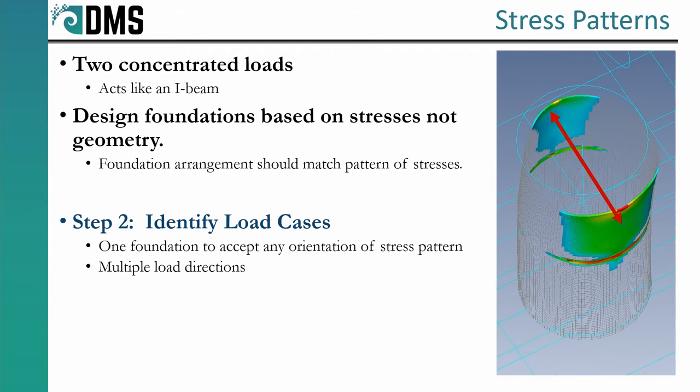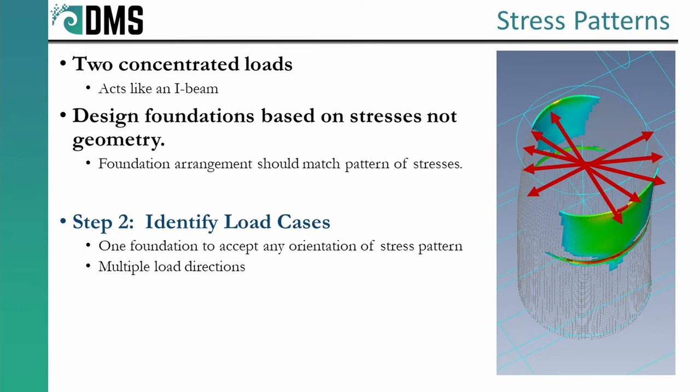If our pedestal is behaving like an I-beam, why not use an I-beam? Well, that's the second challenge of foundation design. The direction of our loads changes. The figure on your screen shows the stress patterns for only one orientation of the crane. As the crane rotates, so does the stress pattern. And that is why we use a circular pedestal, so that it can accept loads from any direction. That also means our foundation needs to accept loads from any direction. So that's quite a few requirements, and it's no doubt a challenge. So let's let the fun begin.